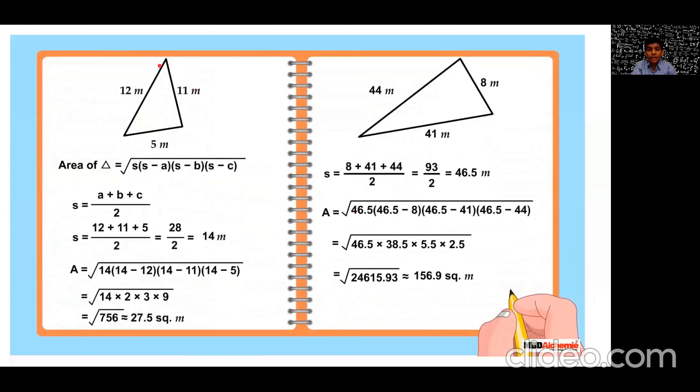For the first triangle, 12, 5 and 11. Area of the triangle is equal to square root of s into s minus a into s minus b into s minus c, where s is equal to a plus b plus c divided by 2. Now, s is equal to 12 plus 11 plus 5 divided by 2 which is 28 by 2 which is equal to 14 meters.